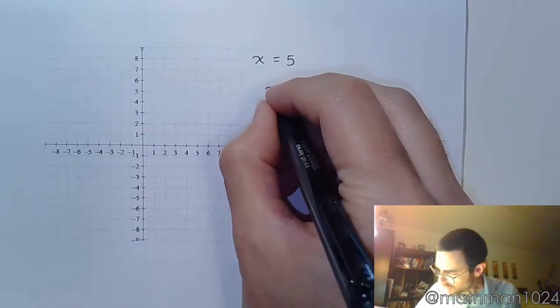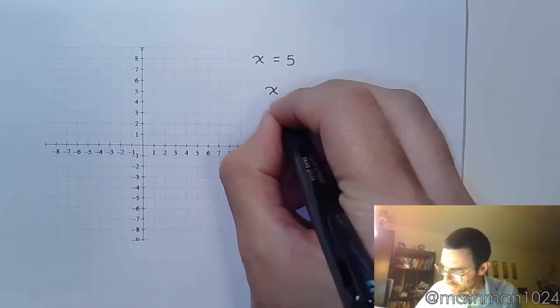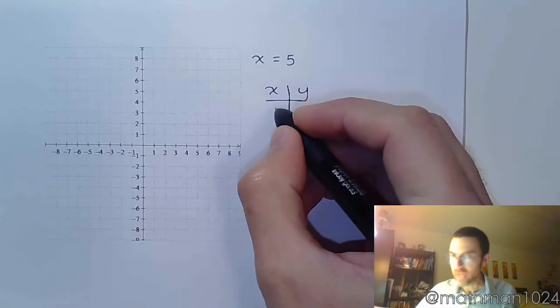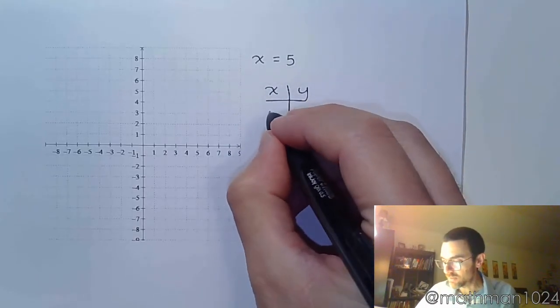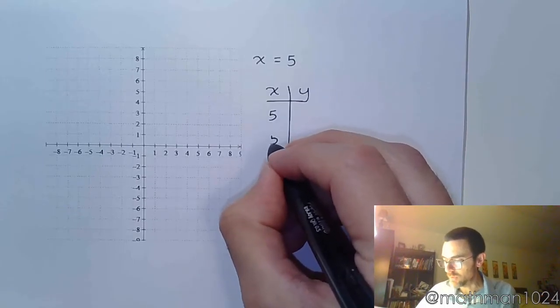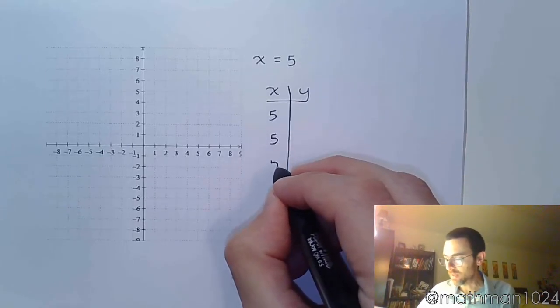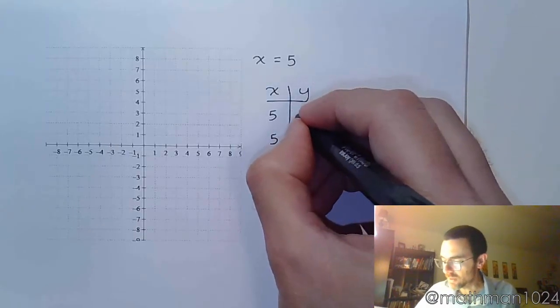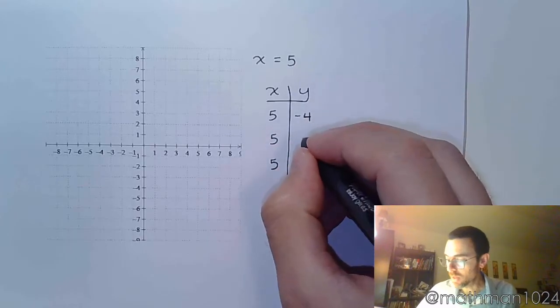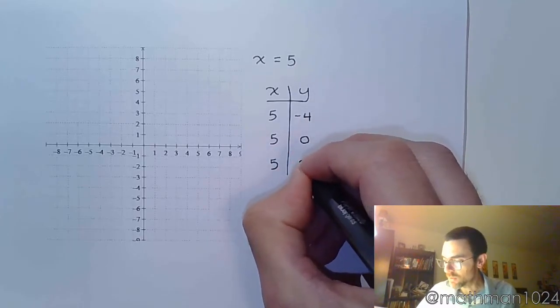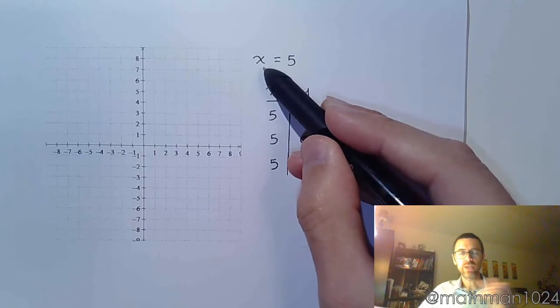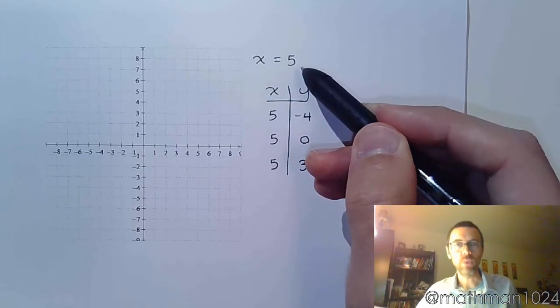Well, if you were to try to complete a t-table of values, x equals 5, and x can only equal 5. It doesn't matter what you do, x can't be anything but 5. y, that's not even here, is free to be anything and everything that it wants to be. So it could be negative 4, it could be 0, it could be 3. It doesn't matter because it's not going to change the fact that x equals 5. There's no place to plug in a y.